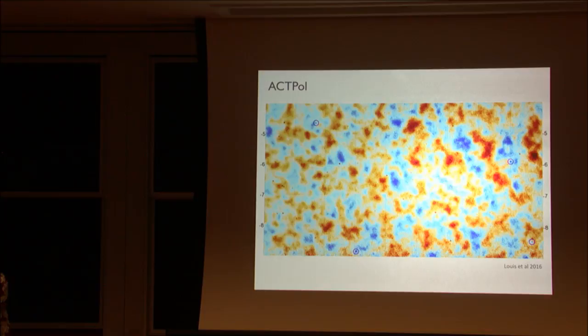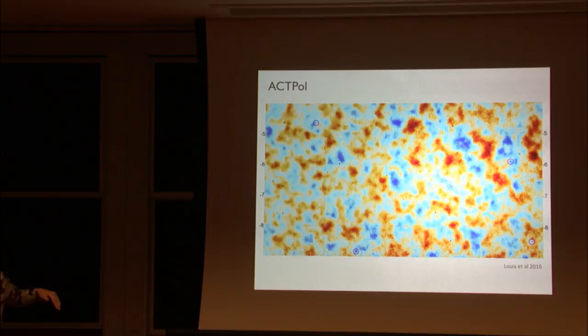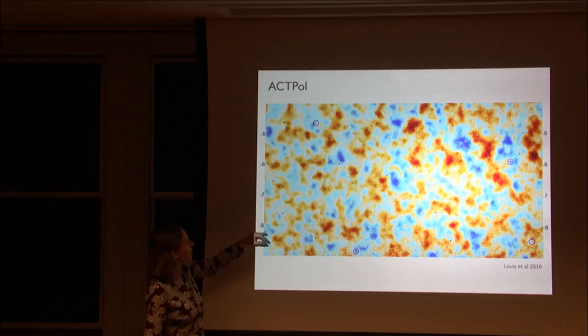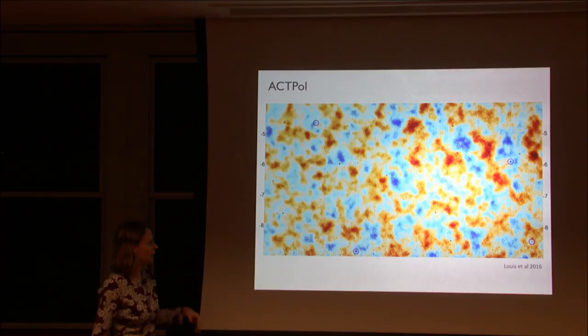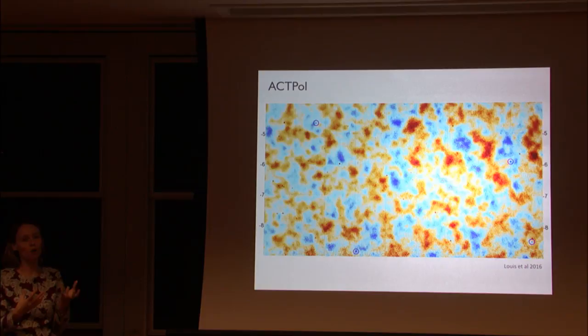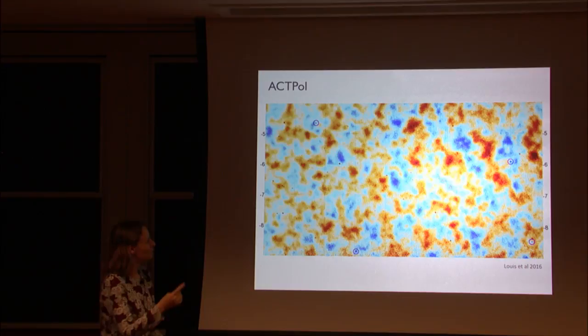Comparing a snapshot of about five by nine degrees of sky: this is the temperature fluctuations in the CMB measured by Planck and ACTPol. The features in the CMB are the same and are correlated between the two, but ACTPol has higher resolution — about arc-minute rather than about five arc-minutes for Planck.